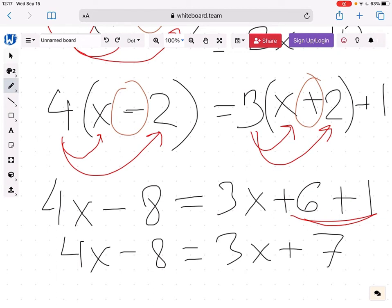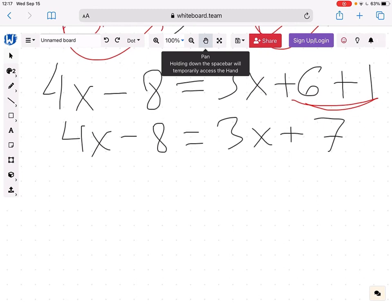The next thing we need to do is to bring all x on one side and all numbers on the other side. So let's start with the x's. We have 4x on the left, 3x on the right. So let's bring everything to the left.